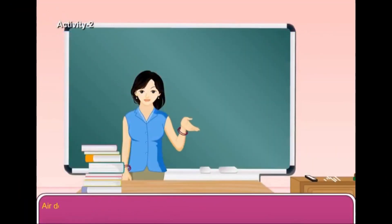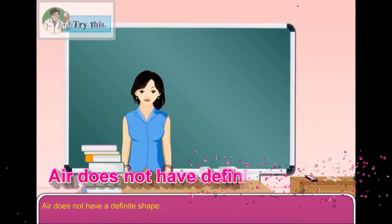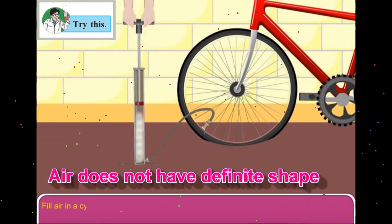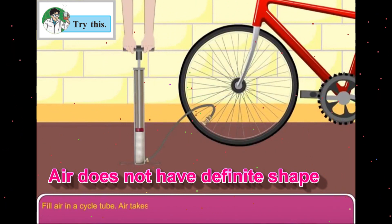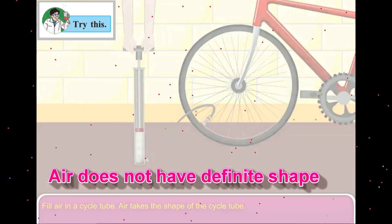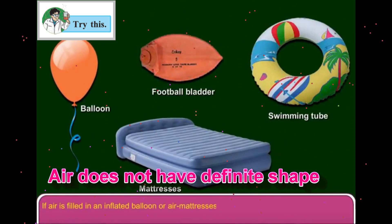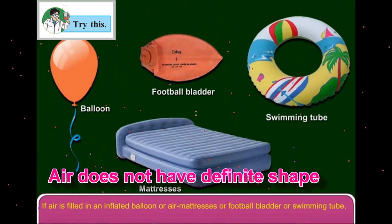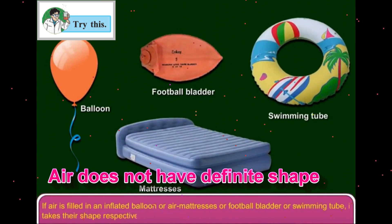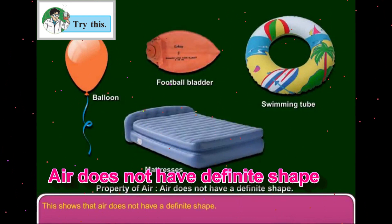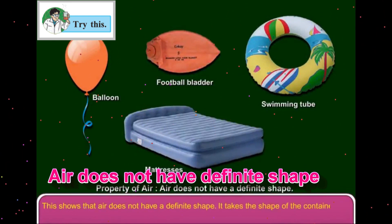Activity 2: Air does not have a definite shape. Let us prove it. Fill air in a cycle tube — air takes the shape of the cycle tube. If air is filled in an inflated balloon, air mattresses, a football bladder, or a swimming tube, it takes their shape respectively. This shows that air does not have a definite shape; it takes the shape of the container in which it is present.